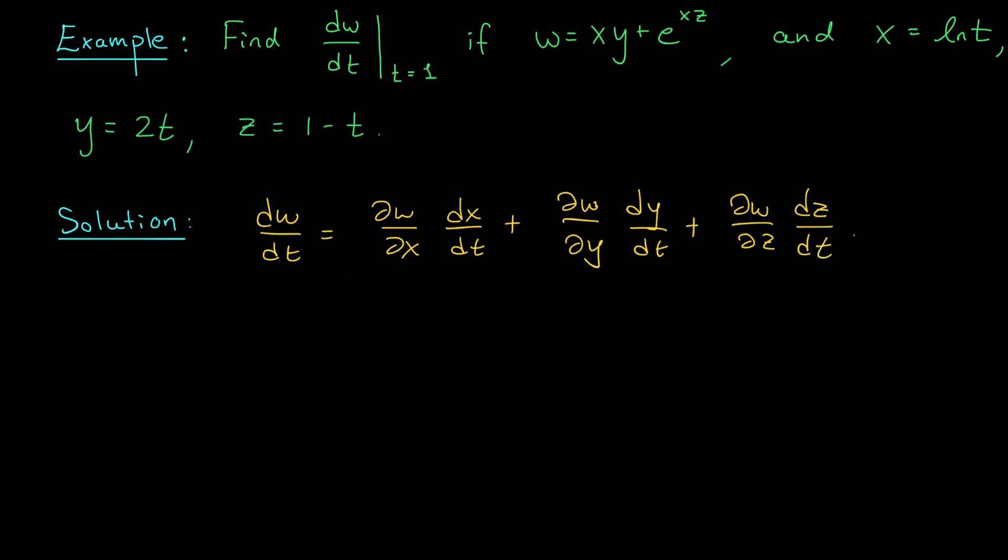Let's see if we can compute some of these derivatives. The partial derivative of w with respect to x, well, I'm going to get y plus, well, then I have a chain rule. So y plus the derivative of the top is z e to the xz. Next, the derivative of x with respect to t is 1 over t. So 1 over t.